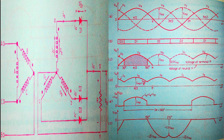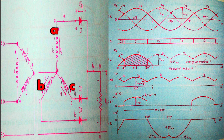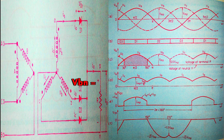In the circuit diagram we have a delta-to-star transformer. After the transformer we have three diodes in three phases: diode D1, D2, and D3. I'll name my phases as A, B, and C. The phase voltages VAN, VBN, and VCN I'll call VA, VB, and VC respectively.